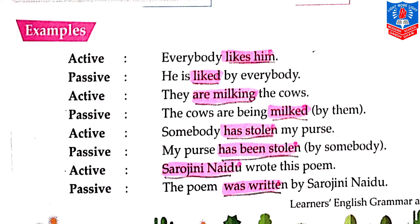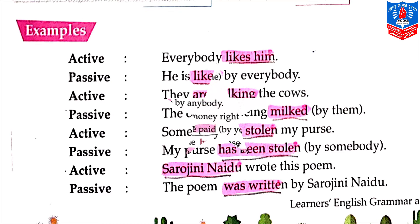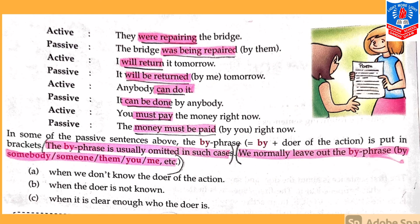The next active voice sentence is: 'Sarojini Naidu wrote this poem.' Here, 'poem' is at the object's place and 'Sarojini Naidu' is the subject. When we change it into passive voice, 'poem' will come at the place of subject: 'The poem was written by Sarojini Naidu.' Some more examples are given on page number 74 in your textbook.